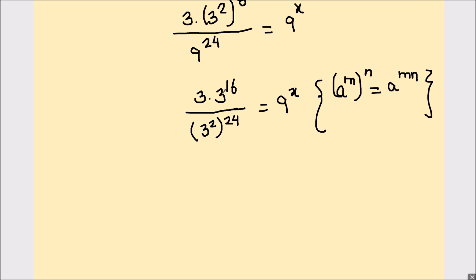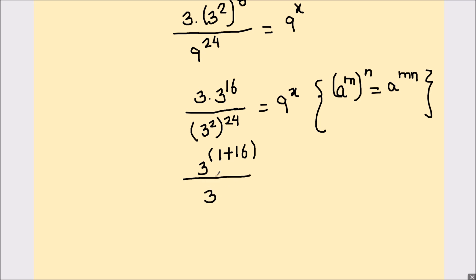So that's going to be 3 raised to power 8 times 2, which is 16. Here we have 3 times 3 raised to power 16 — the bases are the same so the powers get added, giving 3 raised to power 1 plus 16, divided by 3 raised to power 2 times 24, which is 48, equals 9 raised to power x.